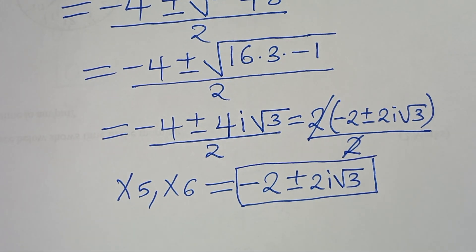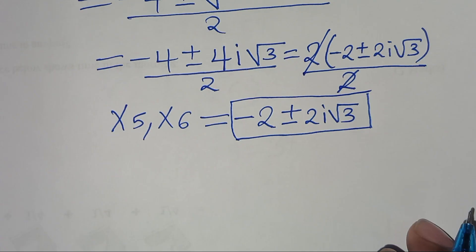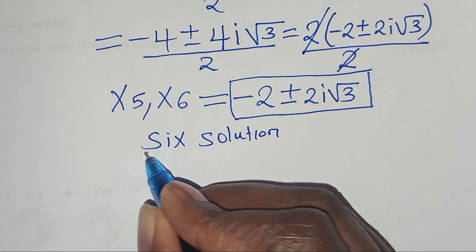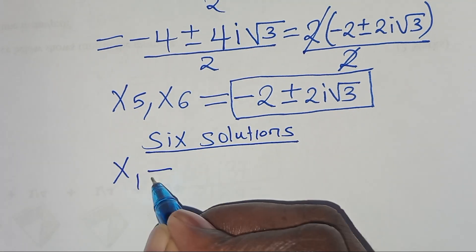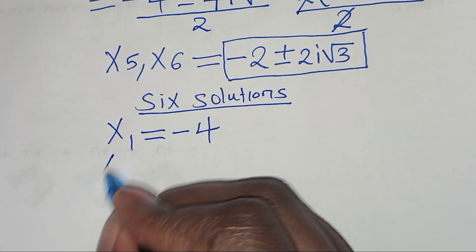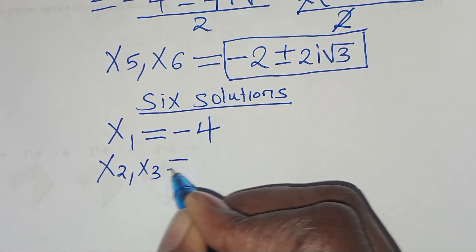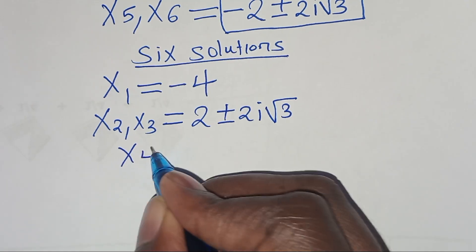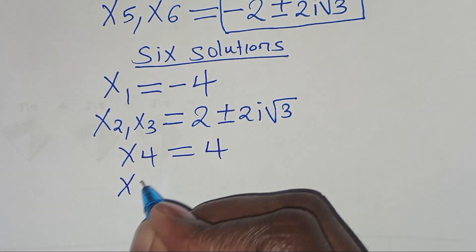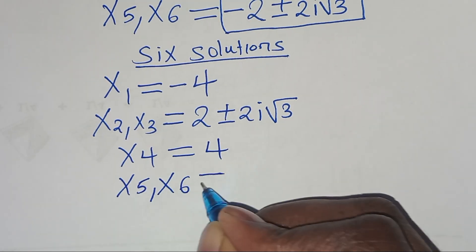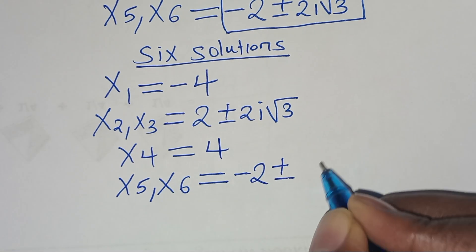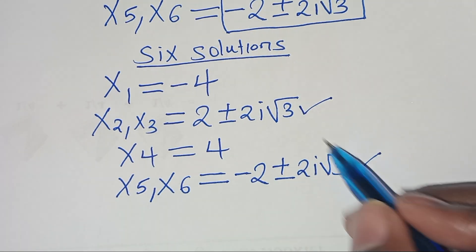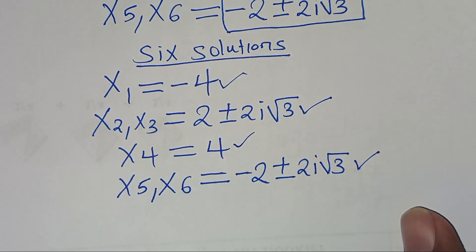These are again two complex solutions. In total, this exponential problem has 6 solutions: x₁ = -4, x₄ = 4 (two real solutions), and x₂, x₃ = 2 ± 2i√3, x₅, x₆ = -2 ± 2i√3 (four complex solutions).